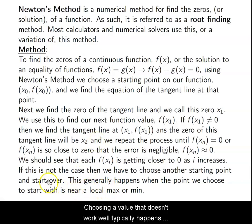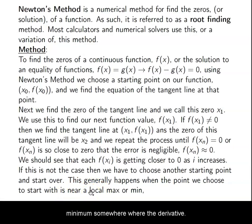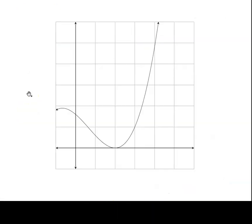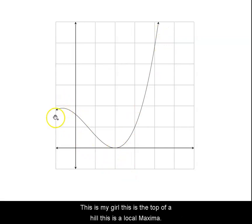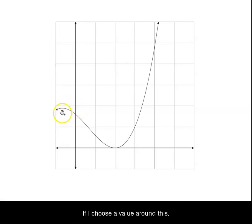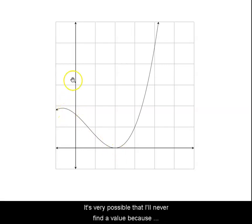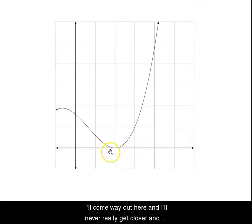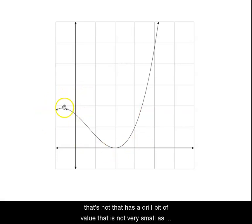Choosing a value that doesn't work well typically happens when you choose a value close to a local maximum or minimum — somewhere where the derivative is very close to zero. If I choose a value around a local maximum, my first tangent line will be very flat and will come way out, and I'll never get closer to the zero. I really want to pick somewhere where the derivative value is not very small.